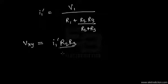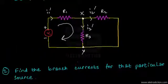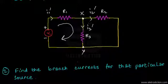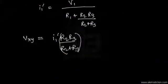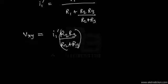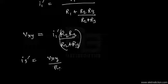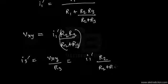The voltage across nodes X and Y is Vxy, given by I1' multiplied by R2·R3 divided by (R2 + R3). Since R2 and R3 are in parallel, the same voltage appears across both. The current I3' through R3 is therefore Vxy divided by R3, which simplifies to I1' multiplied by R2 divided by (R2 + R3).